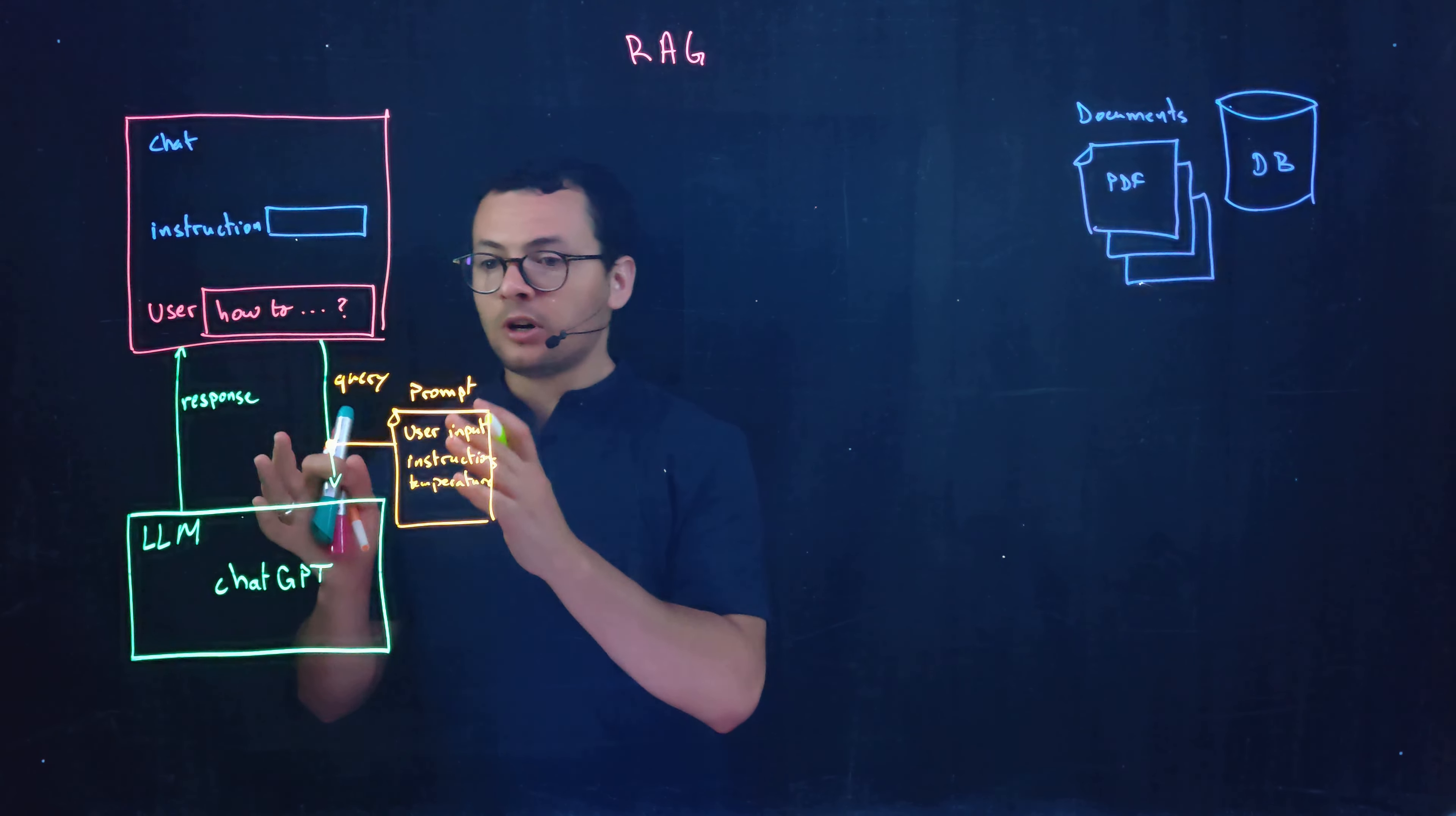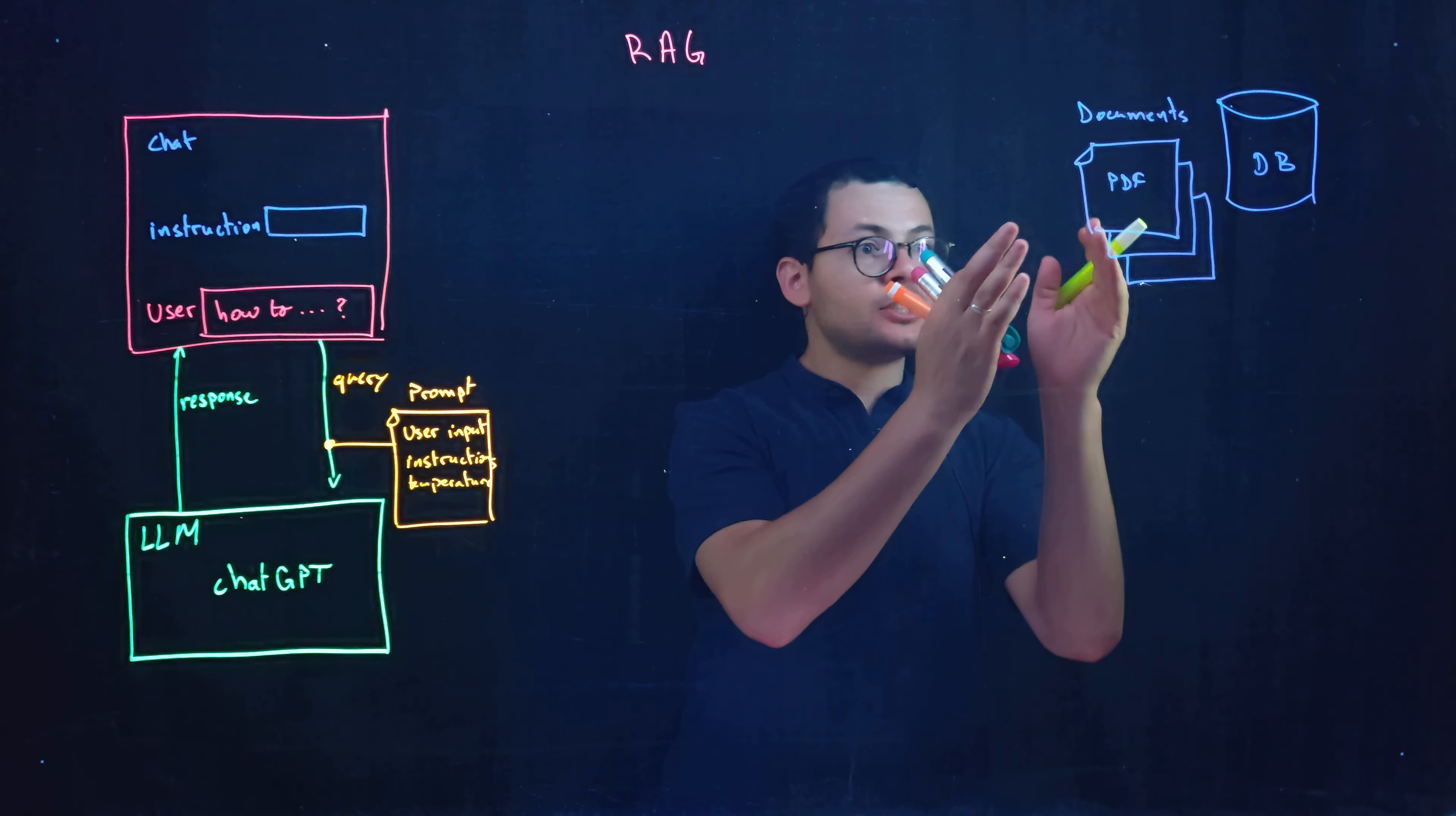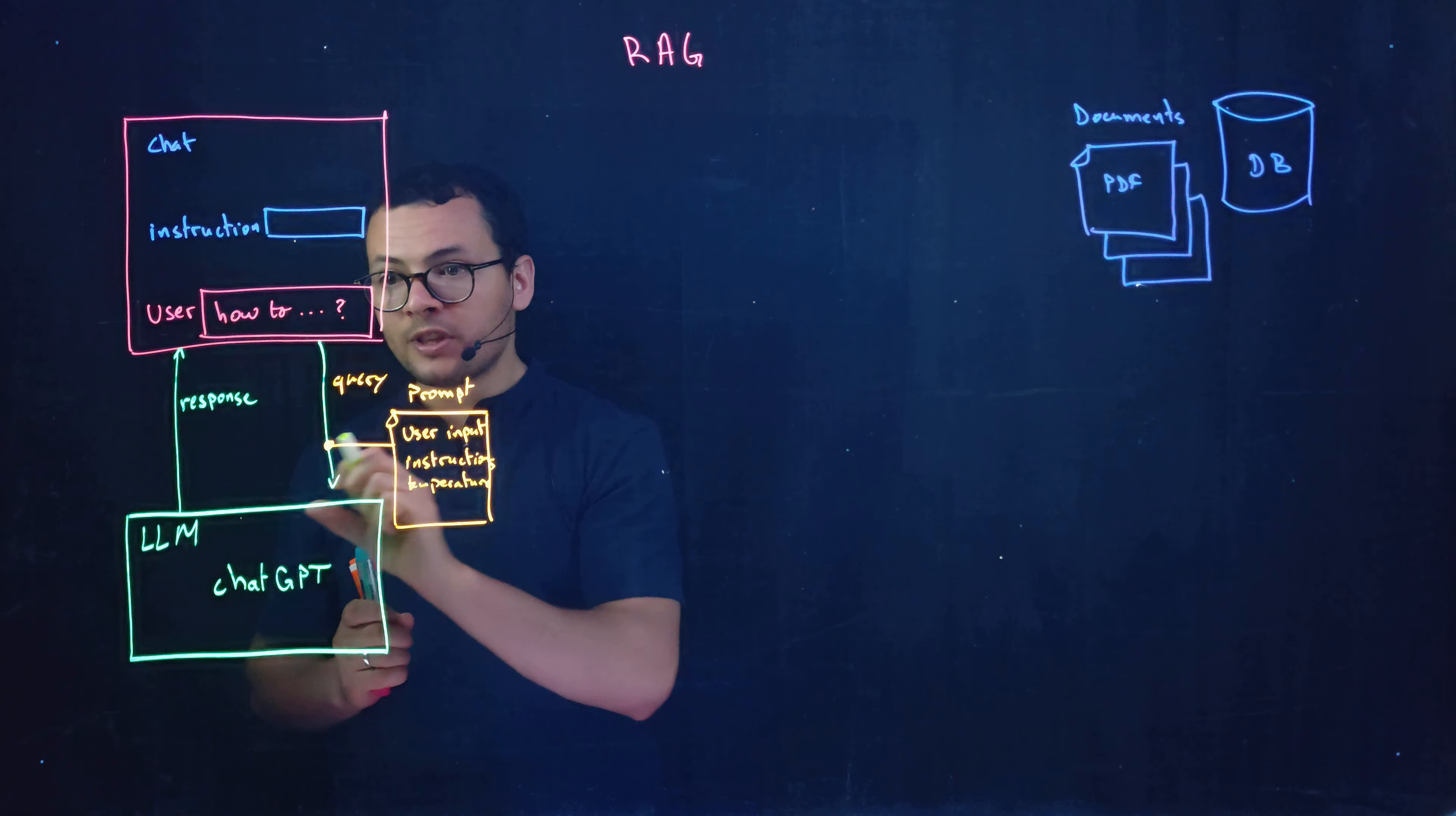So here the user has two options. If he asks ChatGPT about some information that are available only within those documents, then if the user knows exactly which document then he can just take the content of that document and then add it into the user input. So he tells ChatGPT please here are the documents that contains the response. Please analyze those documents and answer me to this question.